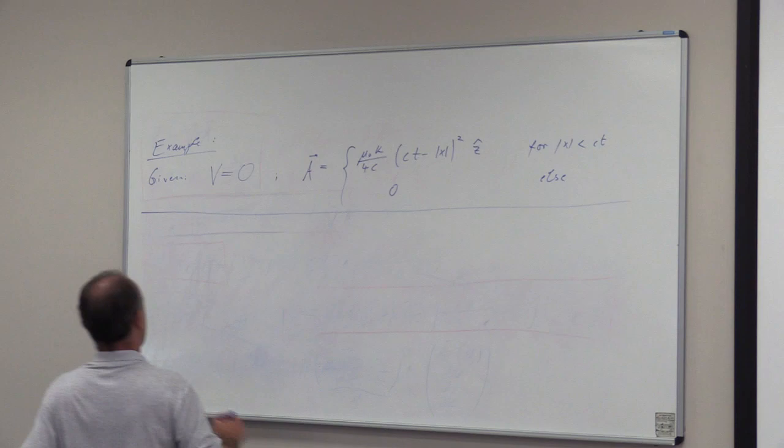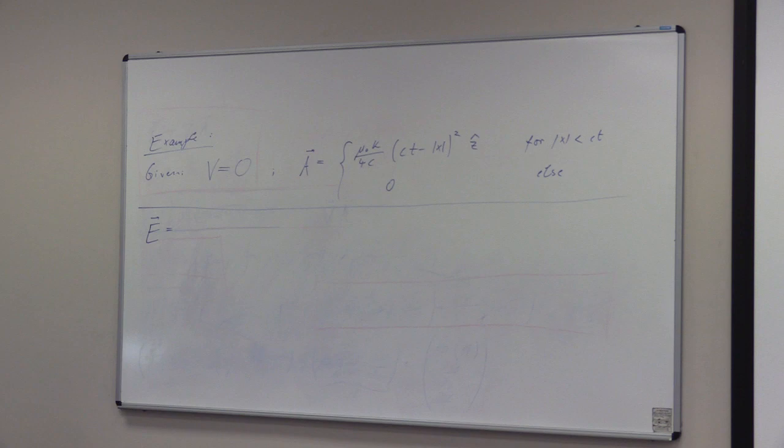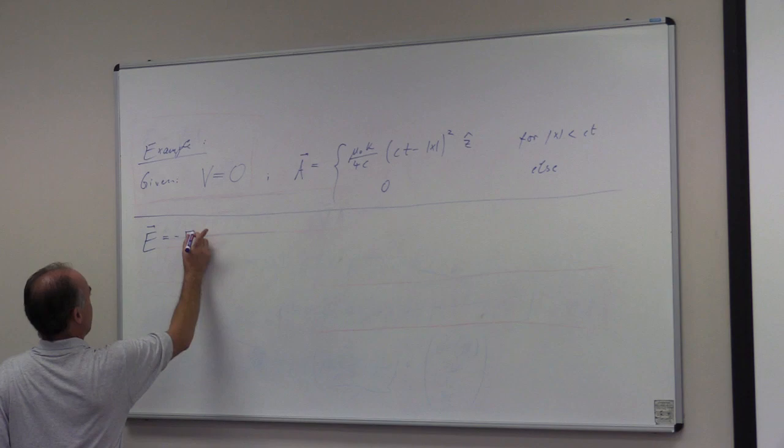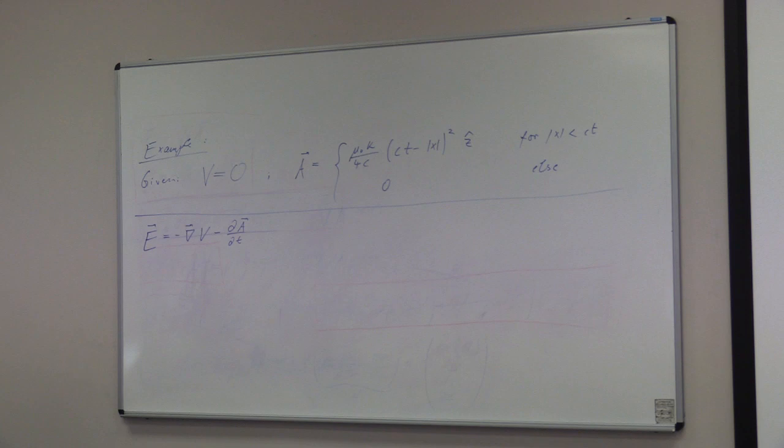So let's figure out what the electric fields and magnetic fields are here. How do we calculate the fields from the potentials? Minus gradient V minus dA over dt. This is one of the things we wake you up at 3 o'clock in the morning, you have to remember. So that is minus gradient V. If V is zero, then the gradient is zero.